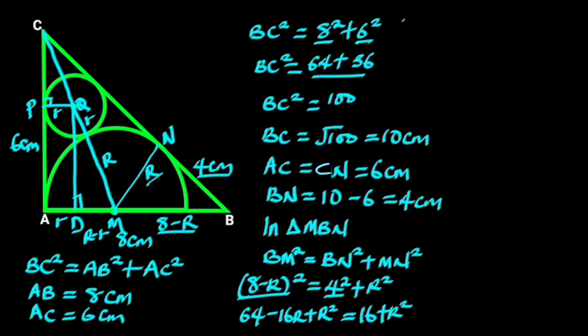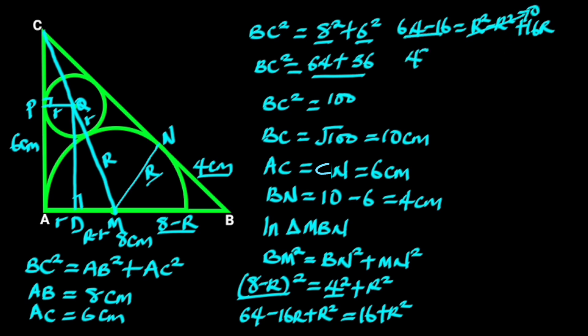Next we collect like terms. Doing so gives us 64 minus 16 equals r² minus r² plus 16r. r² minus r² is 0, and 64 minus 16 is 48. And we are left with 48 equals 16r.